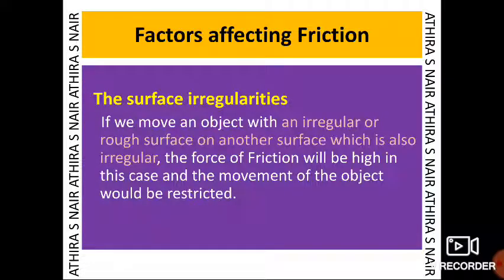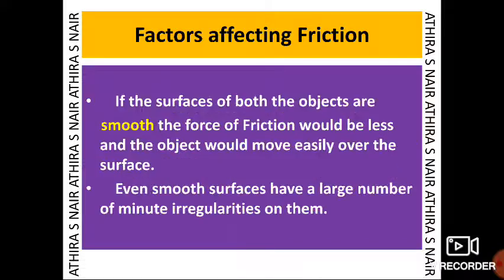What are the factors affecting friction? The first factor is surface irregularities. If we move an object with an irregular or rough surface on another surface which is also irregular, the force of friction will be high and the movement of the object would be restricted. If the surfaces of both objects are smooth, the force of friction would be less and the object would move easily.